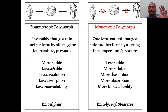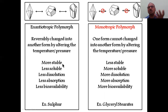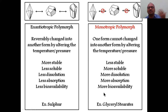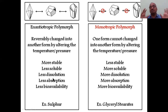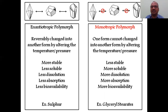In monotropic polymorphism, since forms can change under stress, the system remains stable — it is more stable. The enantiotropic form is more stable than the monotropic metastable form, so it is less soluble and shows less dissolution and absorption. Examples: enantiotropic — glycerol stearates; monotropic — sulfur.